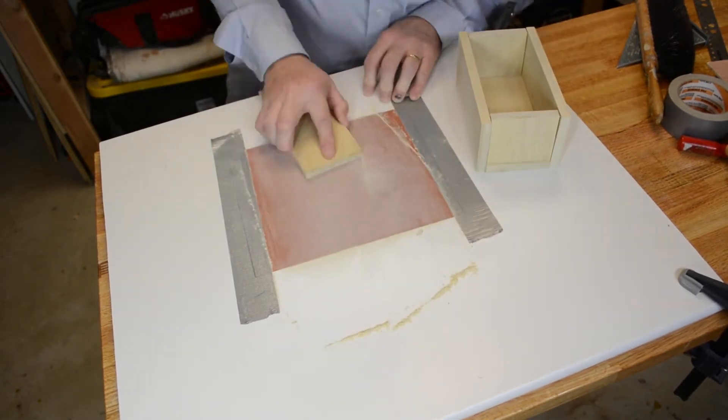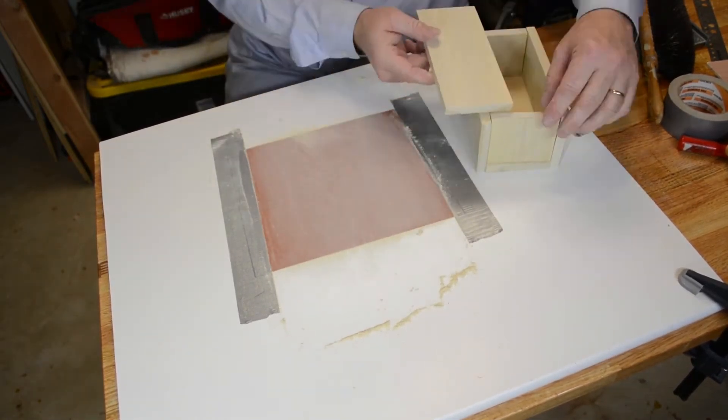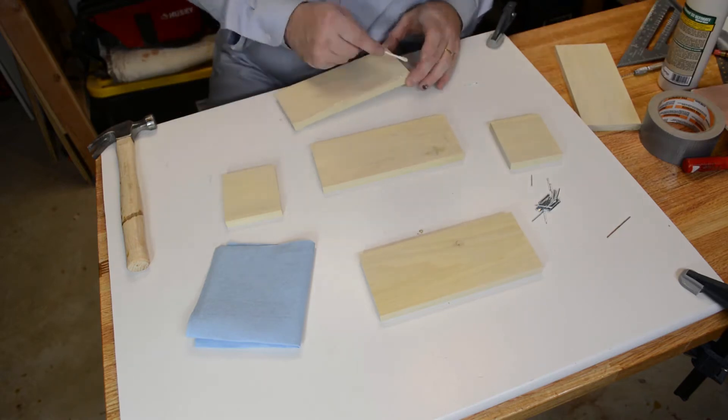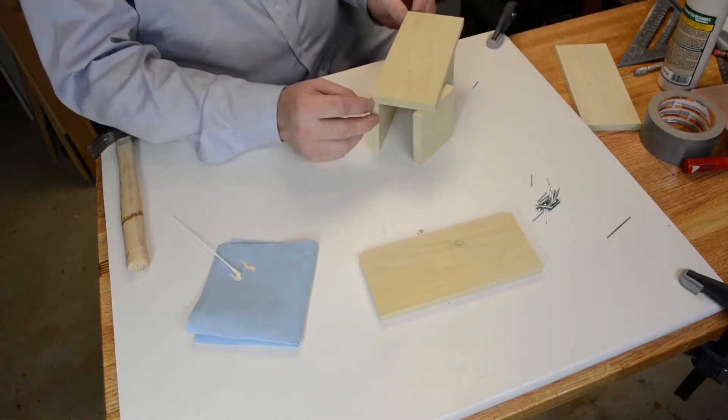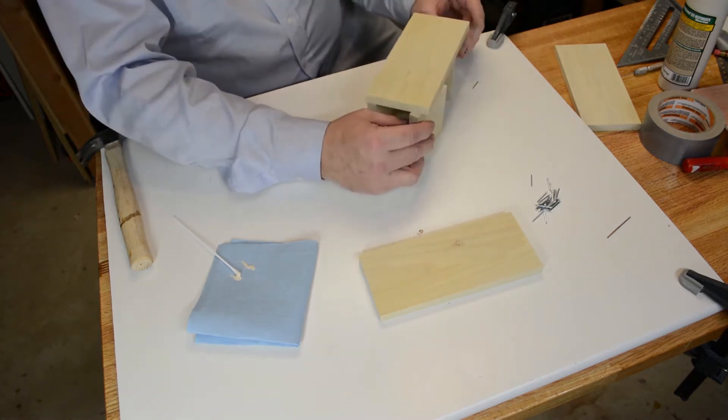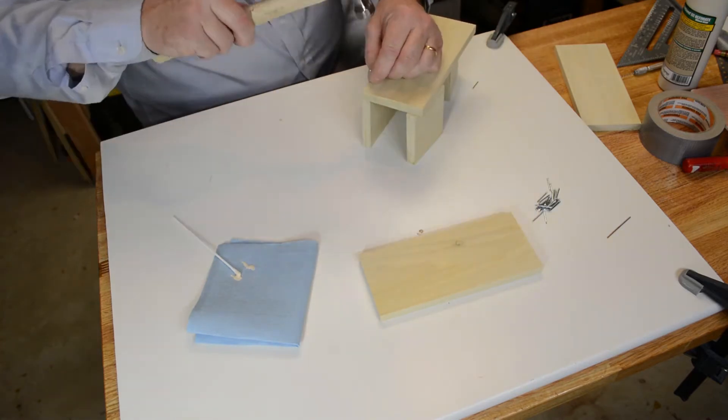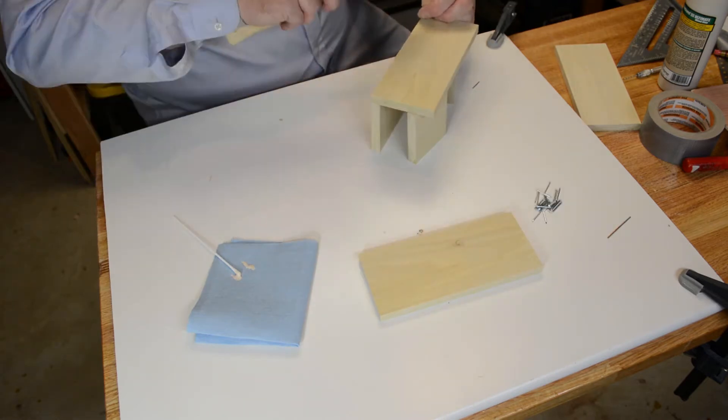And I'm not worried about the top yet. I'm going to sand the whole piece for the top, but we're going to have to cut that. And I'll show you that in a minute. So right now I'm just gluing and using tiny little brad nails. These are one inch brad nails.